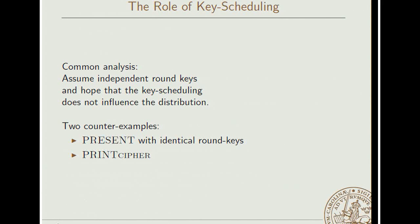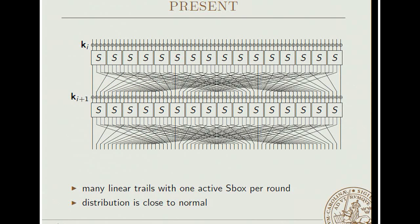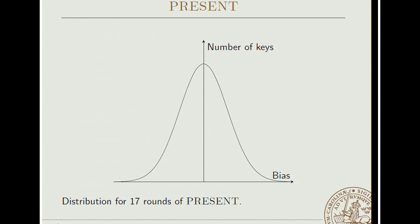First of all, PRESENT, which is a well-known block cipher. If you are familiar with it, it looks like this. If you're not familiar, you don't need to look at this at all. We just note that there are round functions, round keys, the usual stuff. And the distribution is close to normal. So this is what the distribution looks like for 17 rounds of PRESENT. It's a nice Gaussian. That's good.